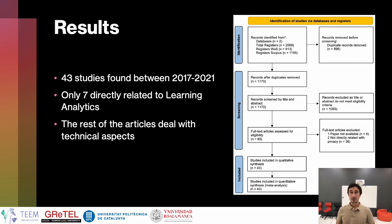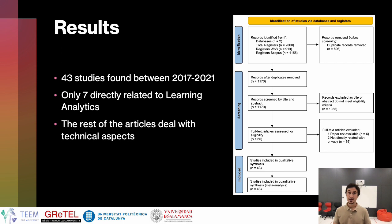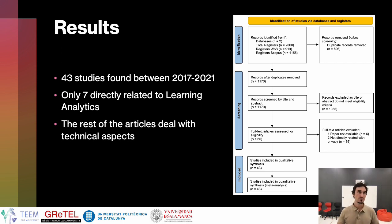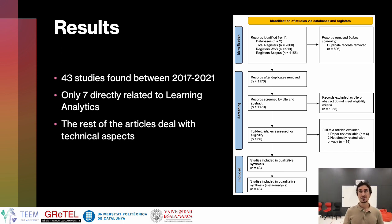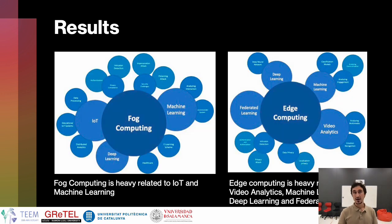However, only seven of these 43 studies are directly related to learning analytics. The others are related to technical aspects that can be transferable to learning analytics to prevent those problems of data privacy.